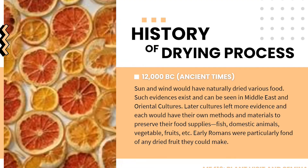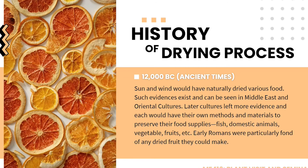Moving to the history of drying processes, it started as early as 12,000 BC, when sun and wind would have naturally dried various foods. Evidence exists in Middle East and Oriental cultures. Early Romans were particularly fond of any dried food they could make. Food dehydration was said to be more of a discovery than an invention — it was accidentally noticed by early people when a fruit fell from a tree and, after being dried by the hot sun, was found to still be edible.